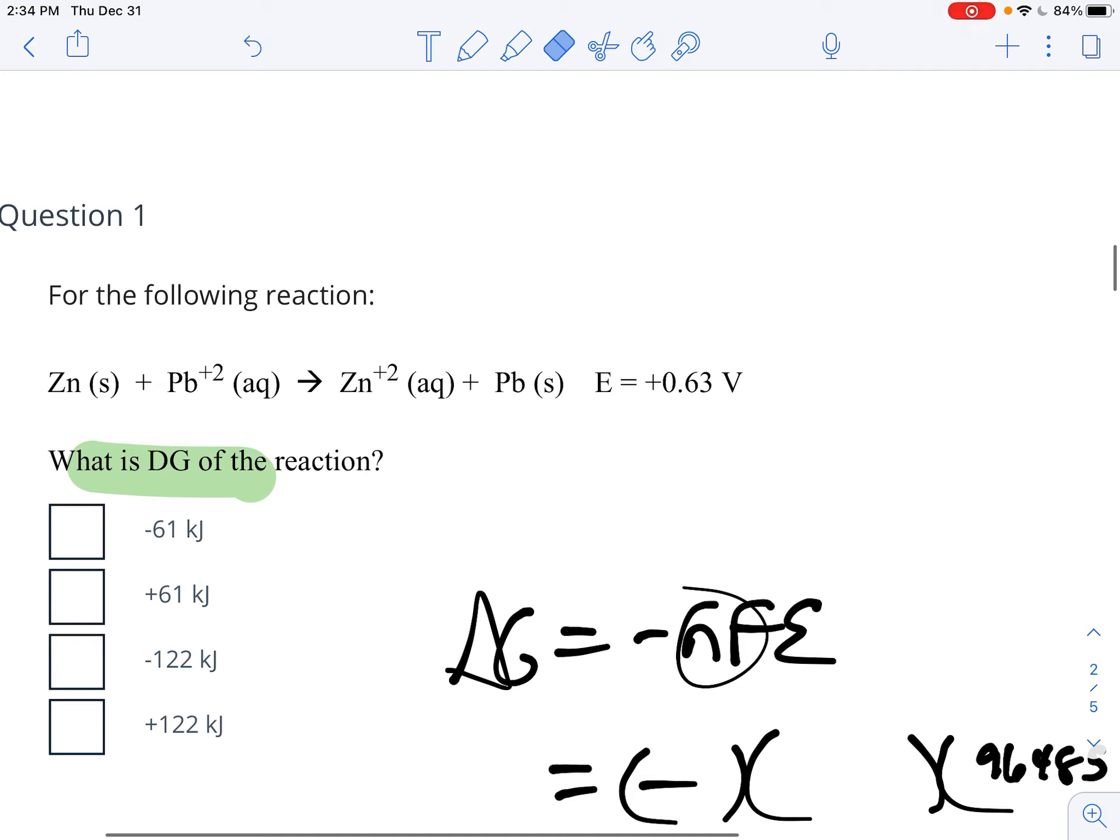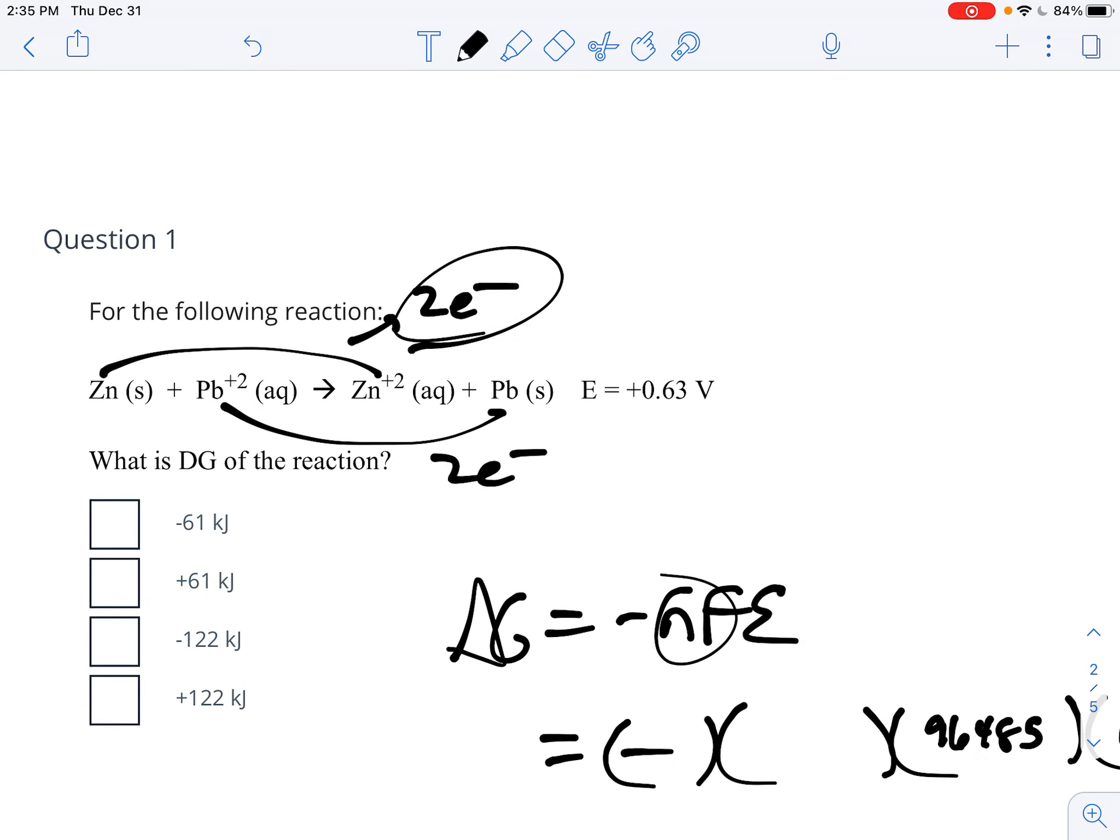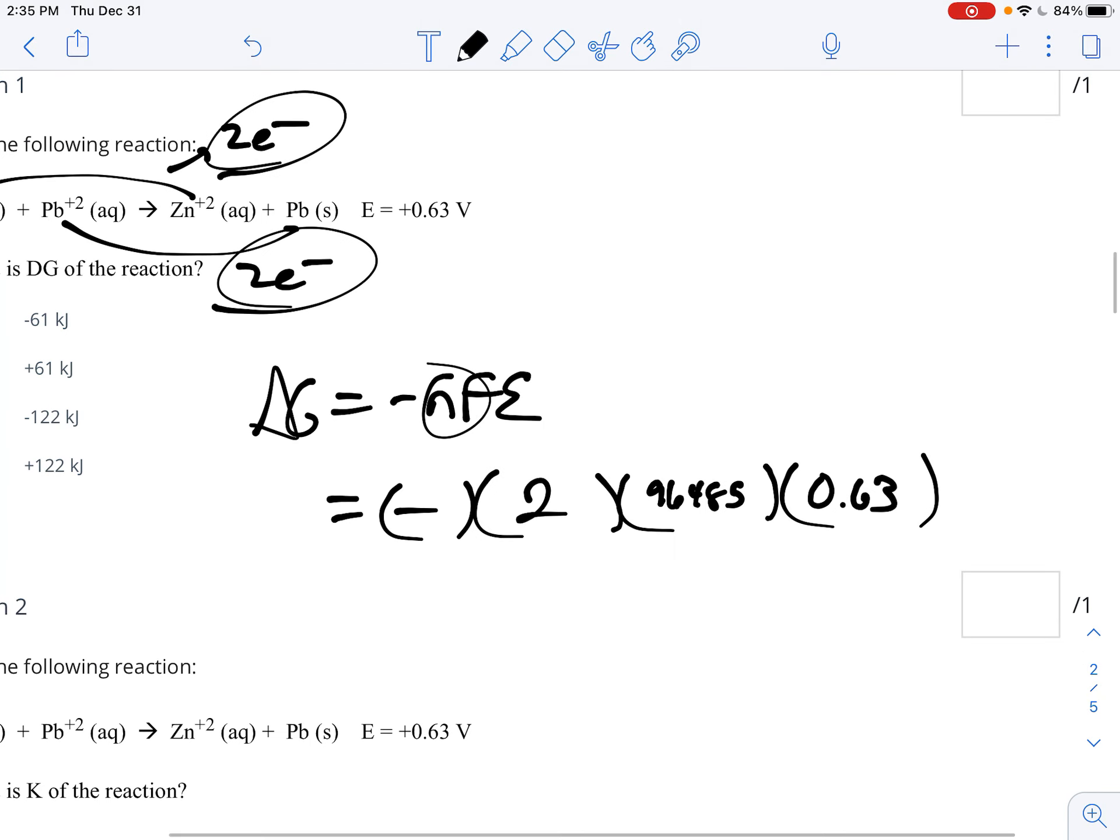So what you have to make sure that you remember is you look at a half reaction. So the zinc is going to a zinc plus 2, that's 2 electrons. The lead plus 2 is going to the lead, that is also 2 electrons. So remember that these 2 electrons that are being lost are literally the same 2 electrons that are being gained here. So your N here is 2 for your moles of electrons.